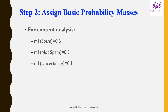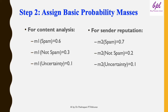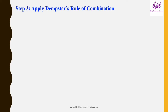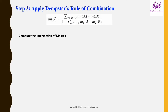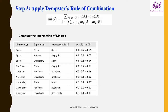Step two is to assign basic probability masses. For content analysis, we assign 60% probability to the email being spam (M1(spam) = 0.6), 30% to not spam (M1(not spam) = 0.3), and 10% to uncertainty (M1(Θ) = 0.1). Similarly, for sender reputation, we assign 70% to spam (M2(spam) = 0.7), 20% to not spam (M2(not spam) = 0.2), and 10% to uncertainty (M2(Θ) = 0.1). Then we apply Dempster's rule of combination by calculating the intersection of all nine possible pairs of evidence and computing M1(A)·M2(B) for each.